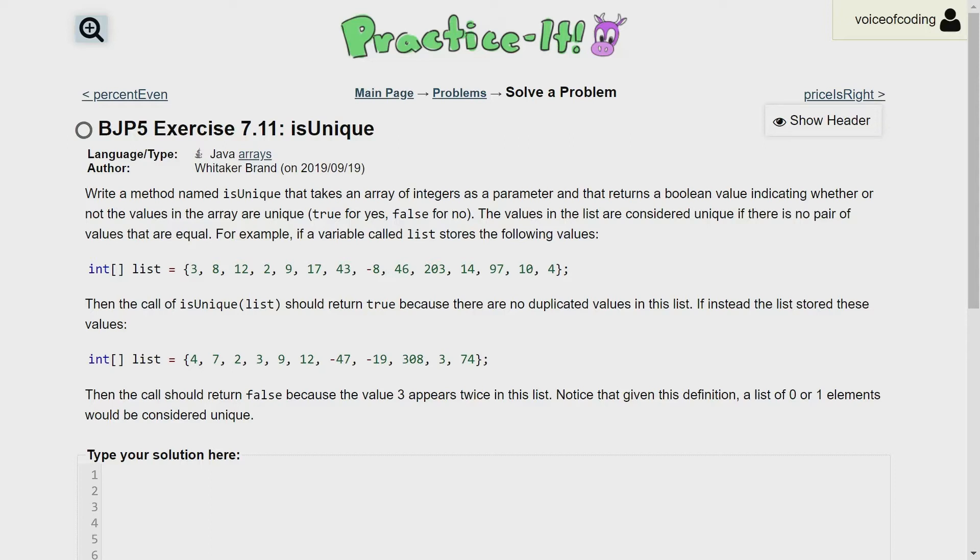For example, if a variable called list stores the following values: 3, 8, 12, 2, 9, 17, 43, -8, 46, 203, 14, 97, 10, and 4, then the call of isUnique(list) should return true because there are no duplicated values in this list.